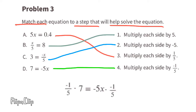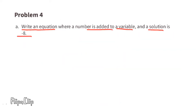Part d: 7 equals negative 5x. Here x is being multiplied by negative 5, so to undo that we divide by negative 5, which is the same as multiplying by negative 1/5. We multiply both sides by negative 1/5 to get a positive 1x, or positive x.